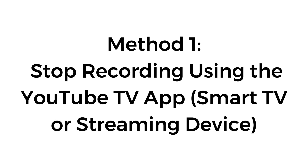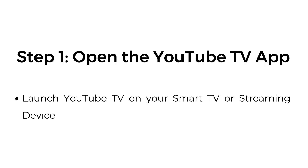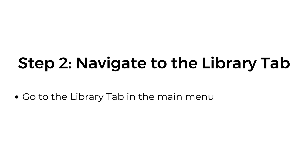Method number one: stop recording using the YouTube TV app on a smart TV or streaming device. Step one, open the YouTube TV app — launch YouTube TV on your smart TV or streaming device. Step two, navigate to the library tab — go to the library tab in the main menu.